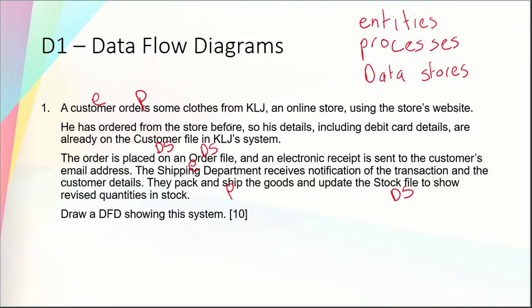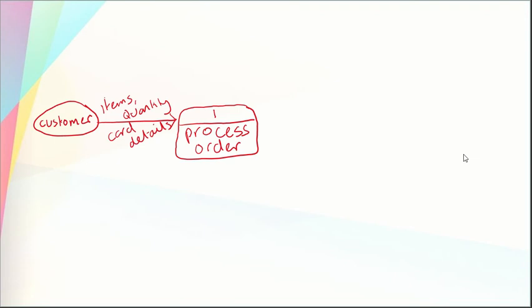The next part says he has ordered from the store before so his details including debit card details are already in the customer file in the KLJ system, so we need to create this data store. The data store shape looks a bit like a rectangle with a missing side, and we have another section where we can label it with a number. I'll put 'D1' — the D represents a digital store, so it's probably saved on the computer. If it had an M it would be a manual store, like paper in a filing cabinet.